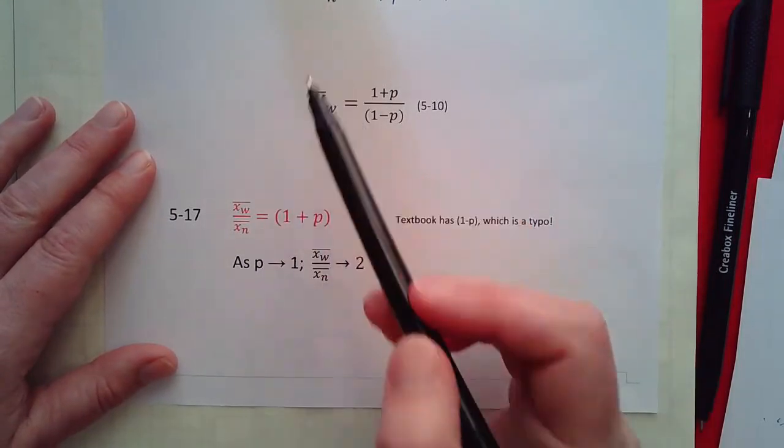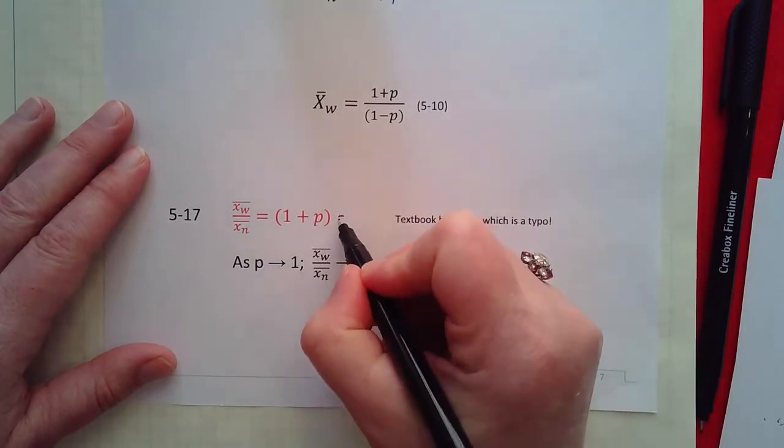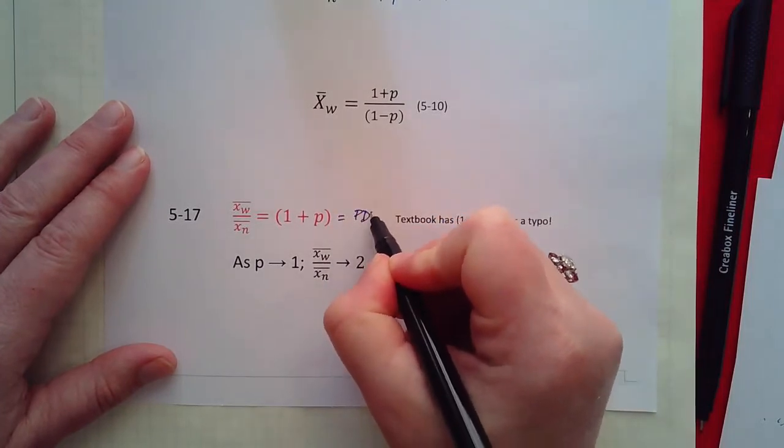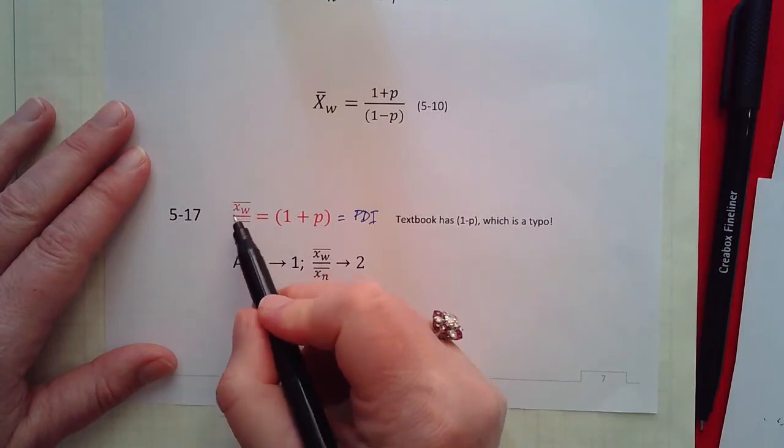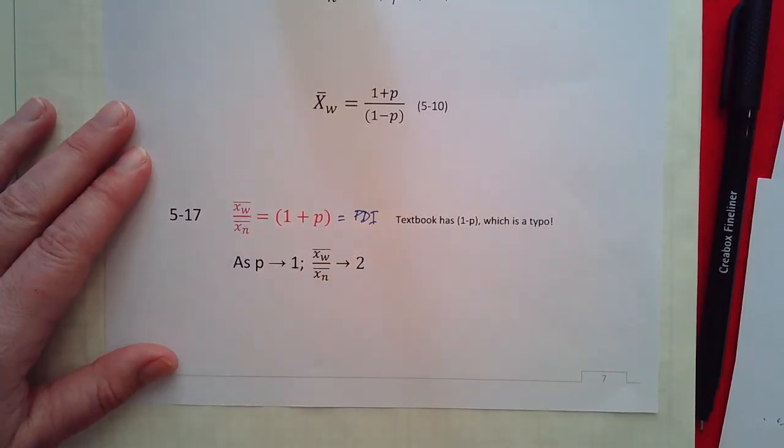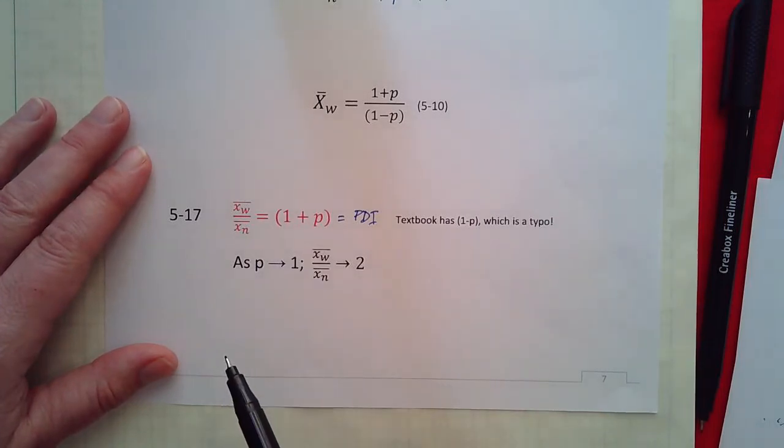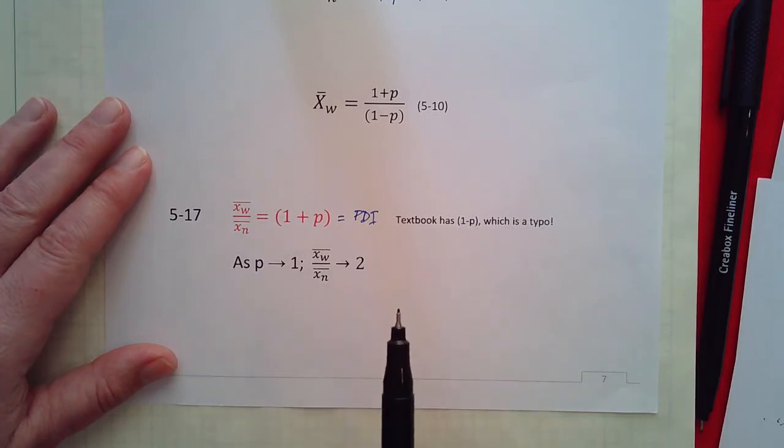But we can also get our polydispersity index right, which is the weight average degree of polymerization divided by the number average degree of polymerization. If you do that out it's just 1 plus p. And hopefully you remember some of this from before the first exam.